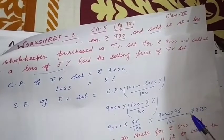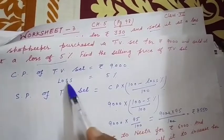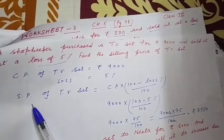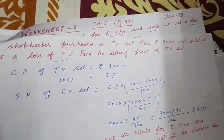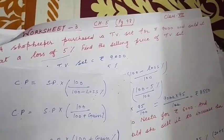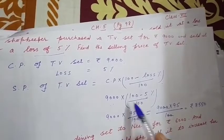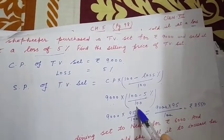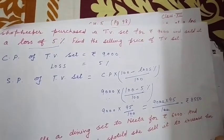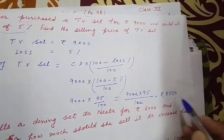Same way formula apply करेंगे — cost price दिया हुआ, loss दिया हुआ, selling price निकालनी है। Formula: SP = CP × (100 − Loss%) ÷ 100। Values fill करते हैं: 9,000 × 95 ÷ 100 = ₹8,550।